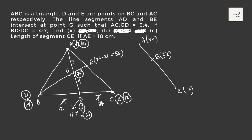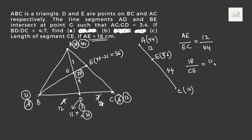So if the mass ratio is 44:12, the distance ratio should be 12:44. That means AE:EC = 12:44. Given that AE = 18 cm, we have 18/CE = 12/44. Simplifying: CE = (18 × 44)/12 = 18 × (11/3) = 66 cm. That is the answer.